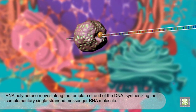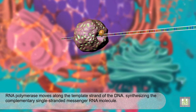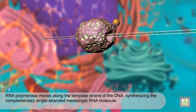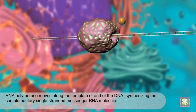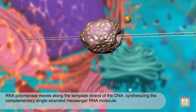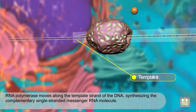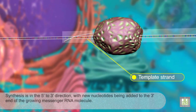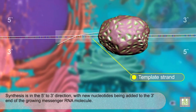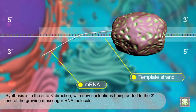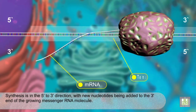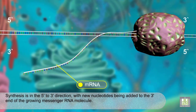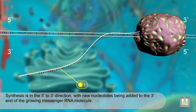RNA polymerase moves along the template strand of the DNA, synthesizing the complementary single-stranded messenger RNA molecule. Synthesis is in the 5 to 3 direction, with new nucleotides being added to the 3 end of the growing messenger RNA molecule.